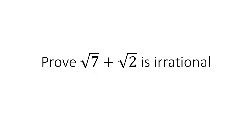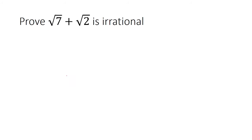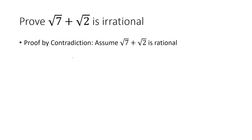In this video, we want to prove that the square root of 7 plus square root of 2 is irrational. In order to prove that it's irrational, we want to use a proof by contradiction. We're going to assume the opposite is true — that the square root of 7 plus square root of 2 is rational.